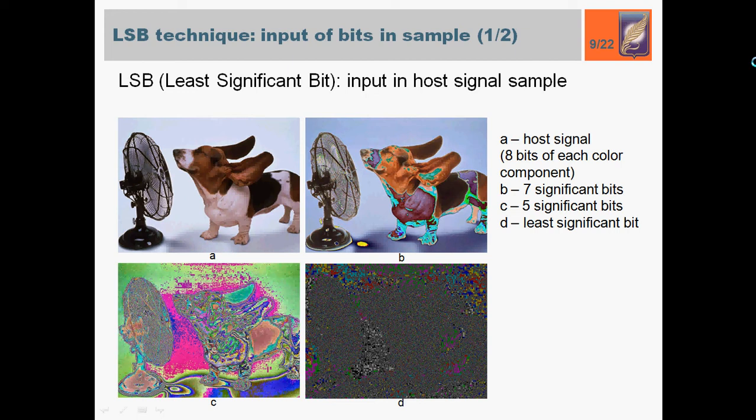Let's have a closer look to the input of bits in a sample of image. On this slide, the host image is presented. On picture A, the host signal is built from all the 8 significant bits of each color component RGB. On pictures B and C, host signal is built from the 7 and 5 significant bits. And on D, host signal is built from one least significant bit. Least significant bit carries the information about the host signal. It's known that people in most cases are not able to notice this change in this bit.